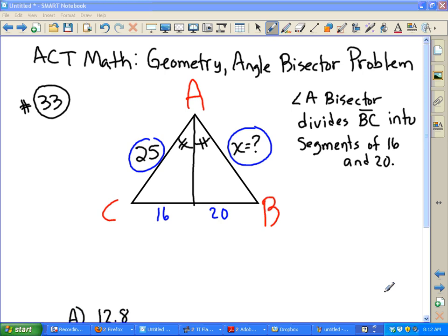OK, because this is an angle bisector, we can set up a proportion 25 is to 16 as X is to 20. So if we do 25 is to 16 as X is to 20,